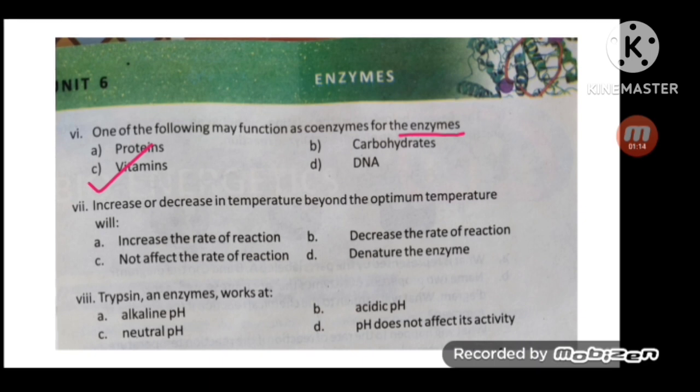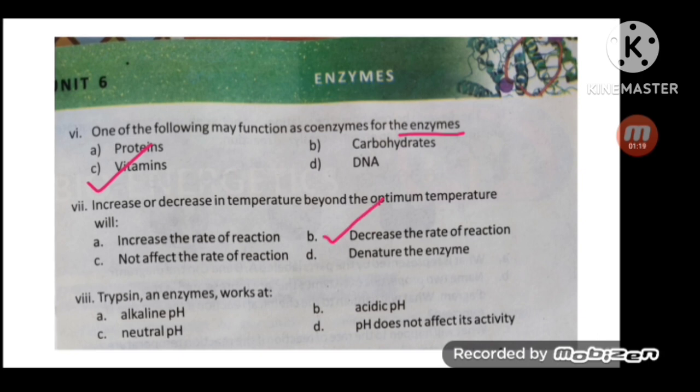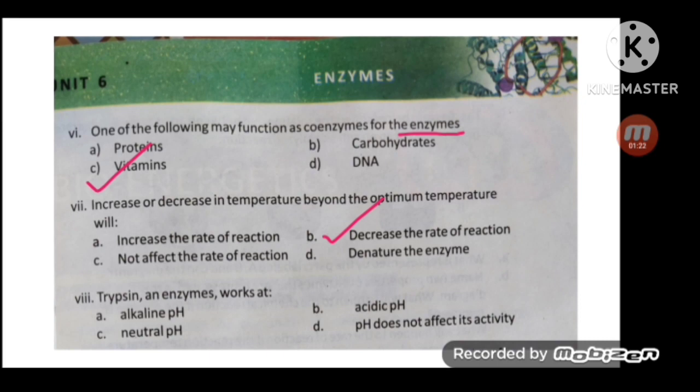Increase or decrease in temperature beyond the optimum temperature will decrease the rate of reaction. The next MCQ: trypsin is an enzyme that works at alkaline pH, so its pH is 8.